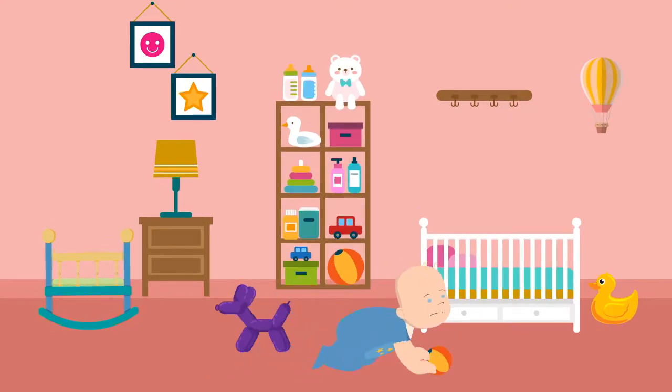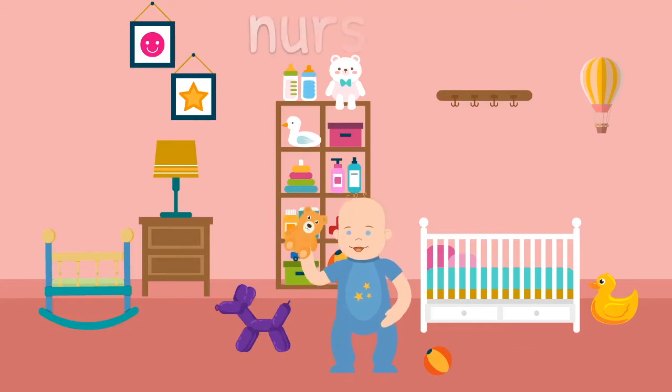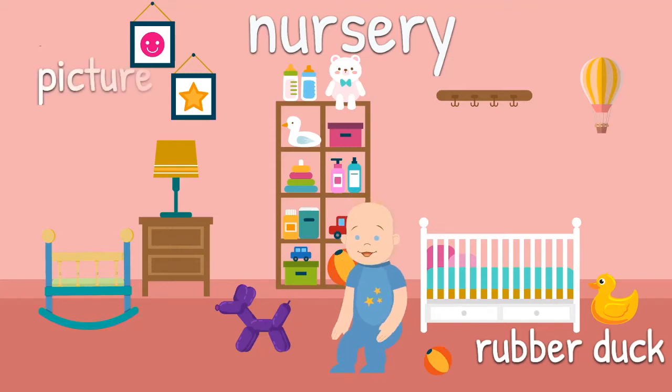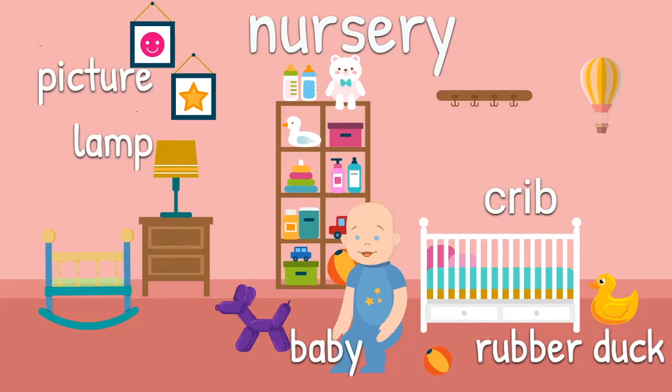I want to try one more picture. In this picture, nouns are nursery, which is a place. Rubber duck, picture, crib, lamp, all those are things. And let's not forget baby, which is a person.